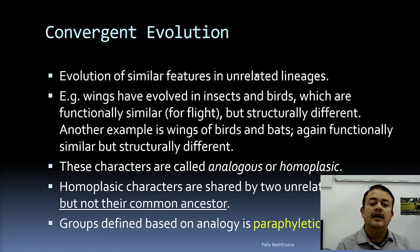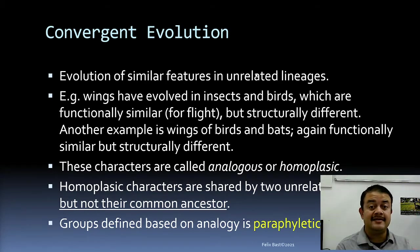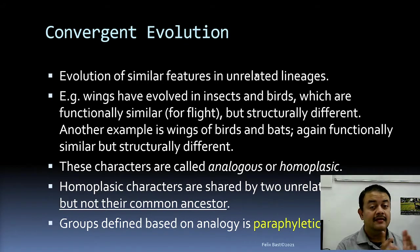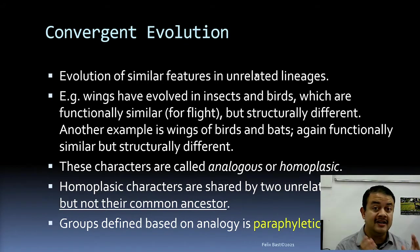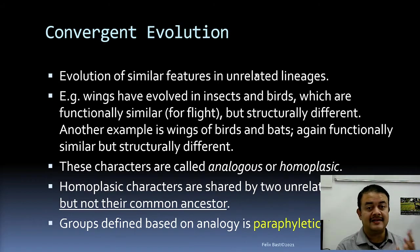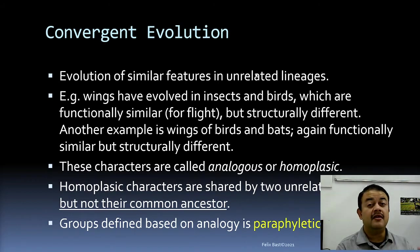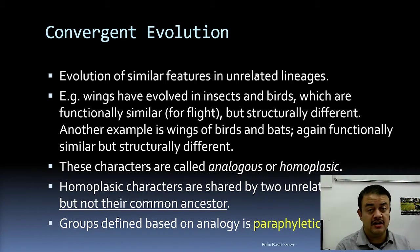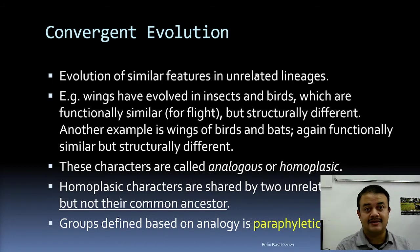These are analogous structures because of convergent evolution, also called homoplastic structures. When it comes to DNA sequences, these sequences are known as homoplastic. This is a major problem — if you include homoplastic sequences, your tree becomes unreliable. In phylogeny, you should not include any homoplastic sequences.